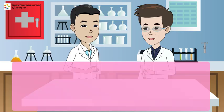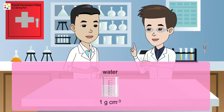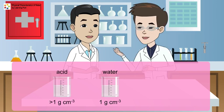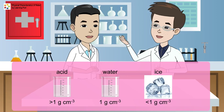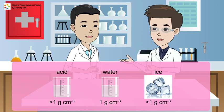Eddie continues to explain, Besides, the density of water is 1 gram per cubic centimeter, and most acids have a higher density than water. Ice has a smaller density than water, so ice floats on water.